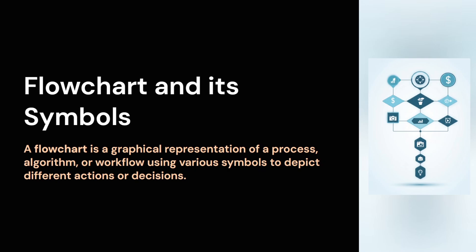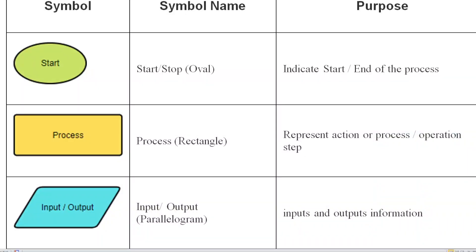In our flowchart, there are different symbols used. The first symbol is Start or Stop — the oval shape represents the logic of start or stop. Then another symbol is Process, which is a rectangle shape used to represent an action or process. For example, some calculation like an average is represented in a rectangle shape.